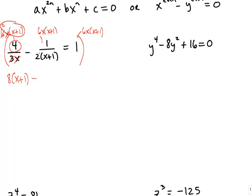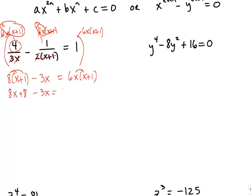In the middle, the 2 goes into the 6 three times, the x + 1 cancels out, so we have 3x left over. On the right-hand side there's no denominator to cancel anything, so we just get 6x(x + 1). Now we have a new equation with no denominators. Distributing the 8 gives us 8x + 8 − 3x = 6x² + 6x.